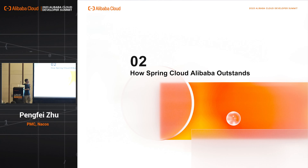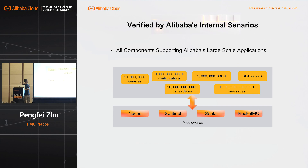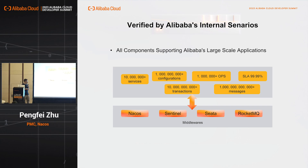Here comes the second part: how Spring Cloud Alibaba stands out. The first factor is that Spring Cloud Alibaba has been verified by internal systems inside Alibaba at a very huge scale — such as 10 million services, 1 billion configurations, and 10 billion transactions — all supported by Spring Cloud Alibaba projects with very high SLA. The code used inside Alibaba and on GitHub are from the same source, so you can expect the same experience when using the code on GitHub.